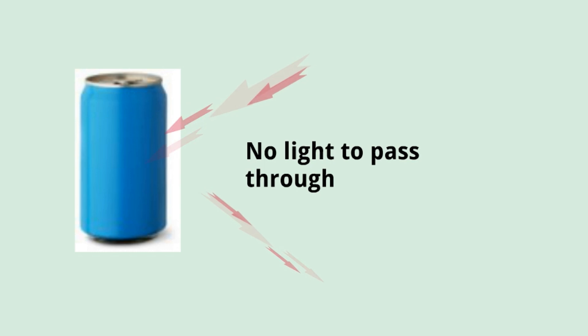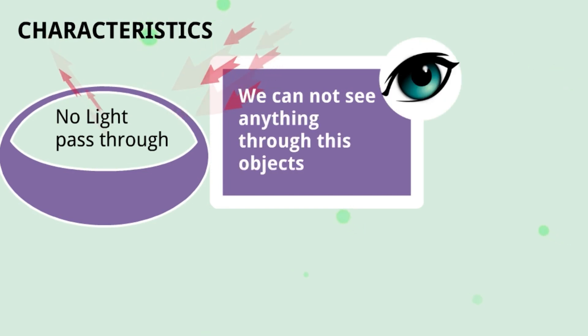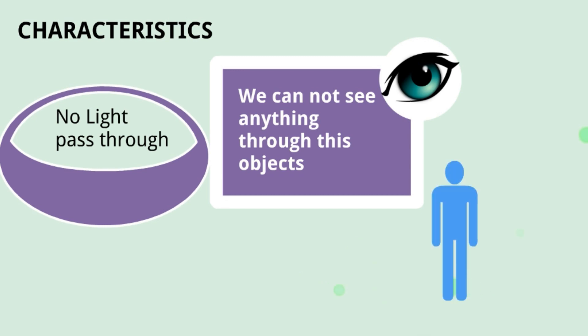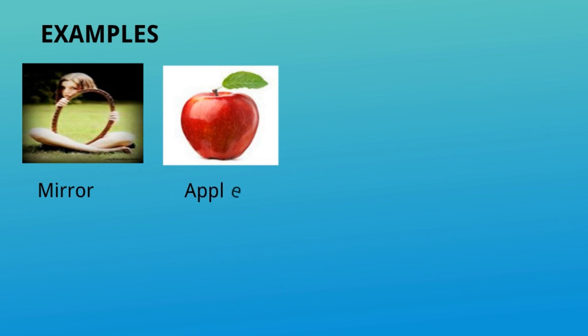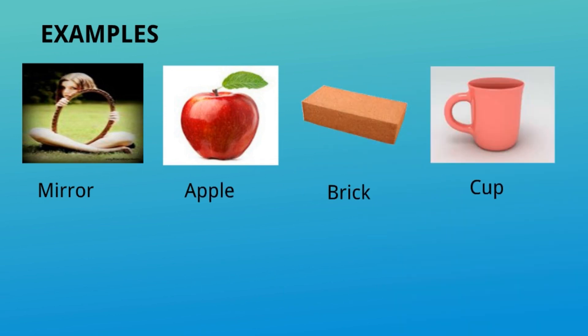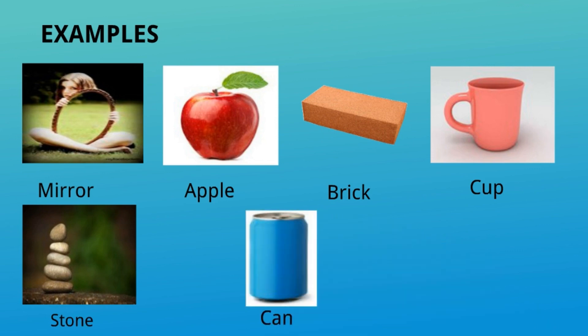Opaque objects — for example, a can. Light falls on the can, some light is absorbed and some is reflected, so no light passes through. This is an opaque object. Characteristics: no light passes through; it may be reflected or absorbed; we cannot see anything through these objects; and since light is completely obstructed, a dark shadow is formed. Examples: mirror, apple, brick, cup, stone, and can.